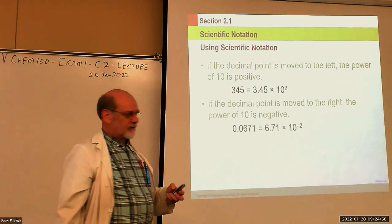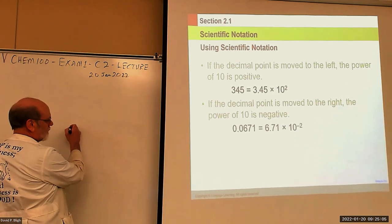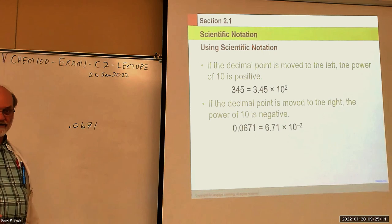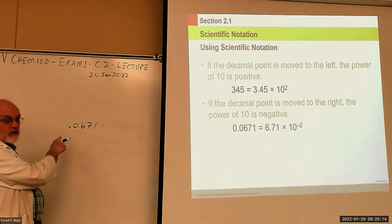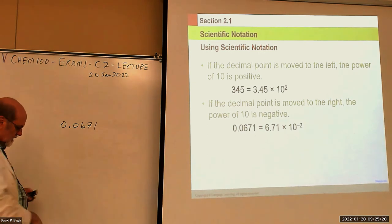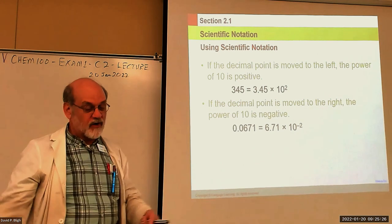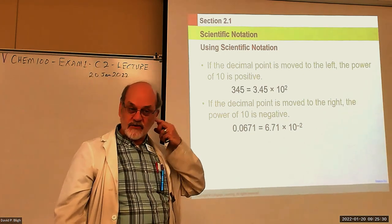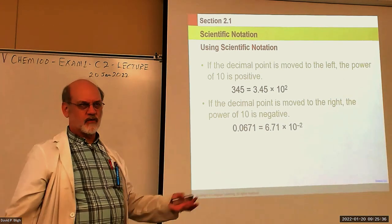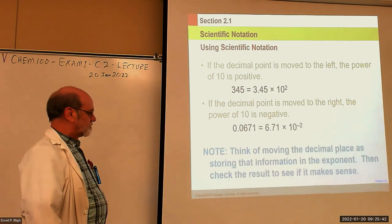One of my pet peeves: if you write a number like .067 without a leading zero, that's wrong. Any time you have a decimal floating out on its own, it must be bracketed by a zero before it. I call those orphan decimals. If you give me an orphan decimal, your answer is wrong. The correct form is 0.067.